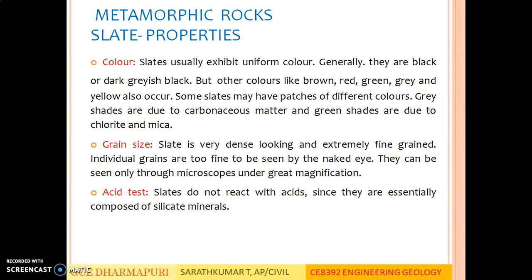Properties of Slate — Color: Slates usually exhibit uniform color. Generally they are black or dark greyish black, but other colors like brown, red, green, grey and yellow also occur. Some slates may have patches of different colors. Grey shades are due to carbonaceous matter and green shades are due to chlorite and mica. Grain Size: Slate is very dense looking and extremely fine grained; individual grains are too fine to be seen by the naked eye and can be seen only through a microscope under great magnification. Acid Test: Slates do not react with acids since they are essentially composed of silicate minerals.